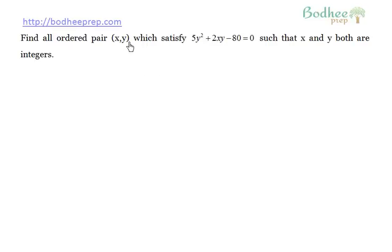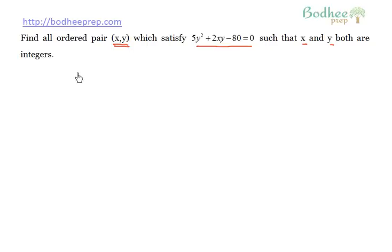Let us take another question. It says that we have to find all the ordered pairs (x, y) such that they satisfy this equation, and both the values of x and y have to be integers. I will rate this question as difficult compared to the kind of questions which appear in CAT. But one should practice this question because the approach for such questions will help you solve all questions of a similar kind which have a lower difficulty level.